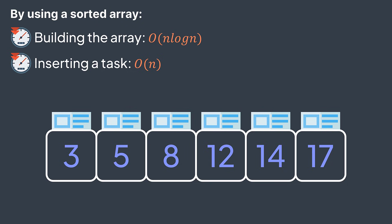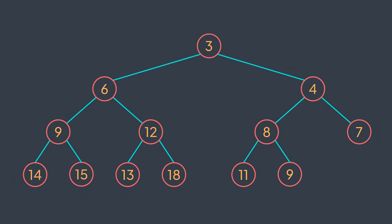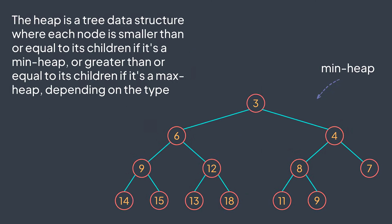What's the solution then? Well, we have a data structure that you will learn about today, called the heap. The heap is a tree data structure where each node is smaller than or equal to its children if it's a min heap, or greater than or equal to its children if it's a max heap, depending on the type.